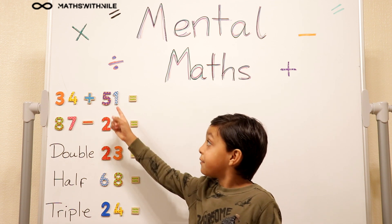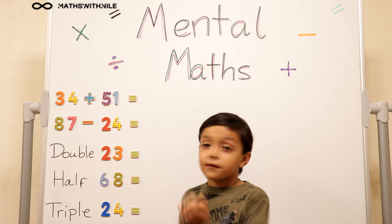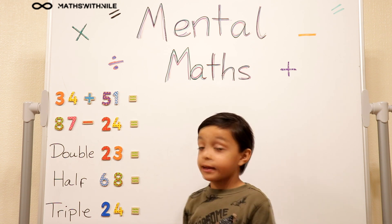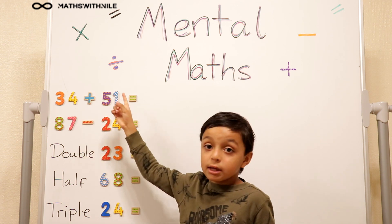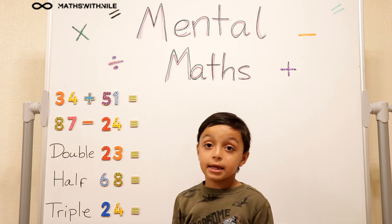First I'm going to add 50 plus 30. Okay. So 50, 60, 70, 80. And 4 plus 1 equals 5. So that means 85.